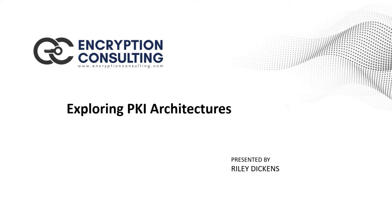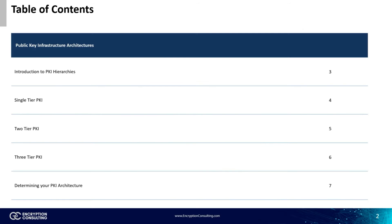Hello, everyone. I'm Riley Dickens with Encryption Consulting, and today we'll be exploring PKI architectures. This video will introduce you to public key infrastructure architectures, including the three different types: single-tier, two-tier, and three-tier. We will also take a look at how you can determine your organization's best PKI hierarchy.